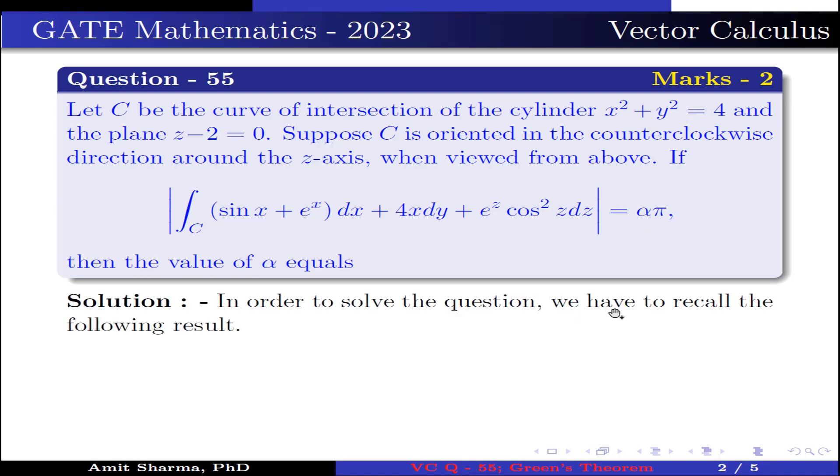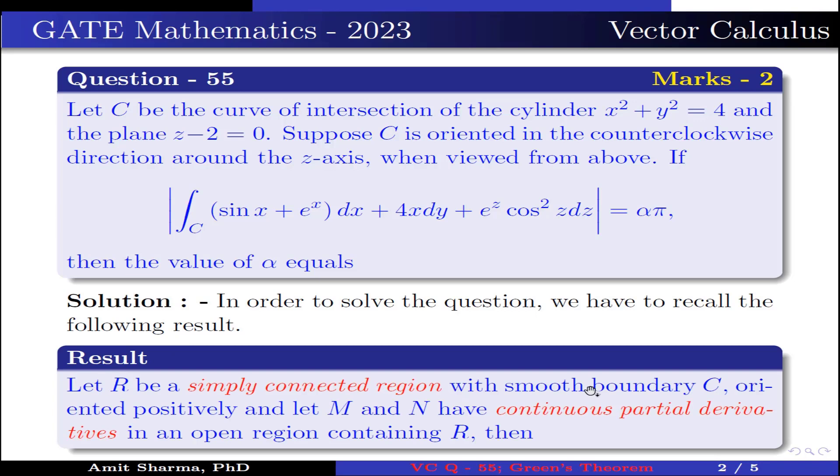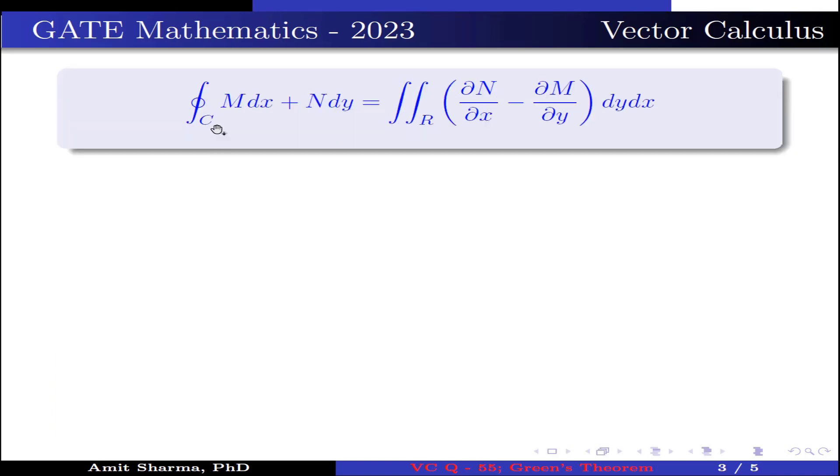In order to solve the equation, we have to recall the following result. Let R be a simply connected region with smooth boundary C oriented positively. Let M and N have continuous partial derivatives in an open region containing R. Then, ∮_C M dx + N dy = ∬_R (∂N/∂x - ∂M/∂y) dy dx.